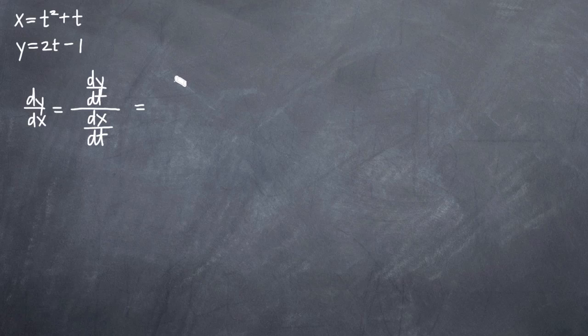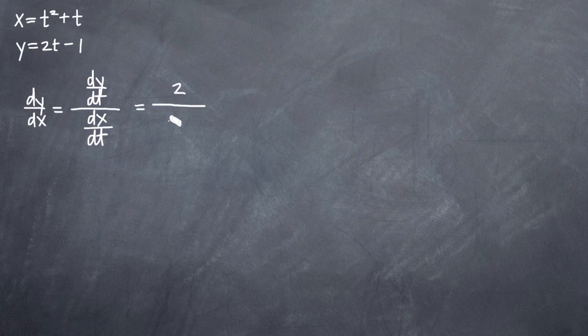So both these derivatives are fairly basic. We can see that the derivative of the y equation with respect to t is just two. If we take the derivative of two t minus one term by term, we get two minus zero, which of course just simplifies to two. So our numerator will be two. Our denominator will be the derivative of the x equation with respect to t, so when we take the derivative of t squared plus t, we get two t plus one.